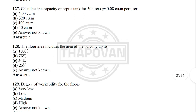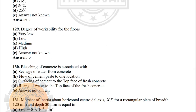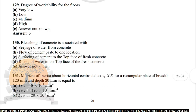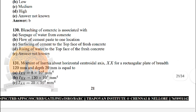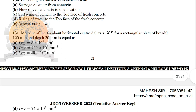Next: the floor area includes the area of balcony up to — the correct answer is option C: 50 percentage. Next: degree of occupability for floors — option B: low. Next: bleaching of concrete is associated with — the correct answer is: seepage of water from the concrete.